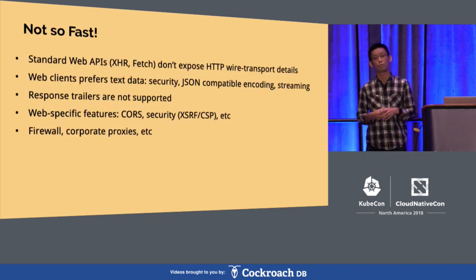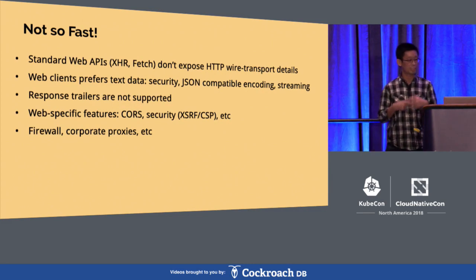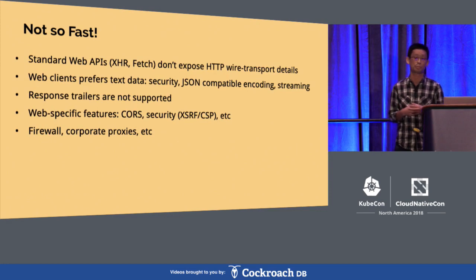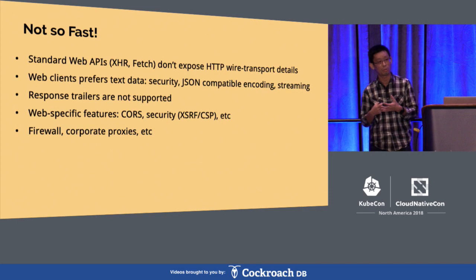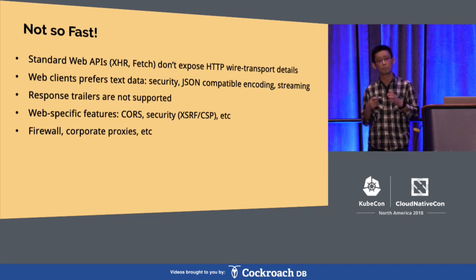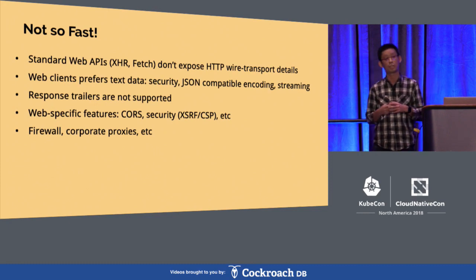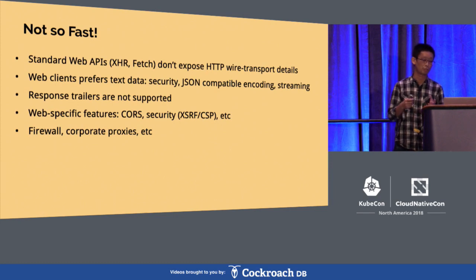The answer is, unfortunately, no right now. The browser environment is rather restrictive. The standard web APIs it exposes to us, like XHR and Fetch, don't expose the underlying HTTP wire protocol details. There's no concept of a channel. We cannot control what kind of protocol negotiation happens. We have very little control over the low-level stream underlying connections. And for browser clients, they usually prefer text data, whereas gRPC is mostly a binary protocol, so there are some difficulties there.